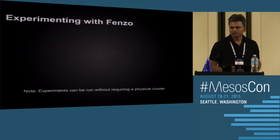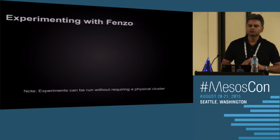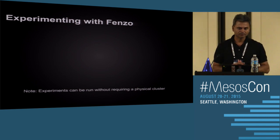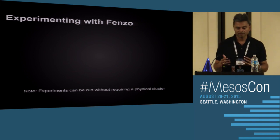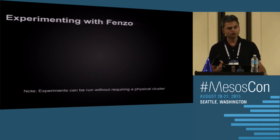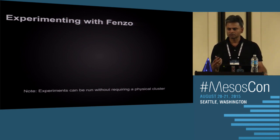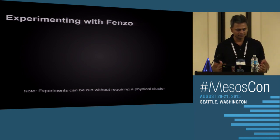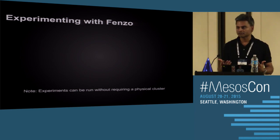Since FENZO is a scheduler library, you can experiment with it without spinning up an entire cluster. You can mock resource offer objects and feed them to FENZO — it doesn't depend on Mesos code itself, it has its own offer representation. You can give in task requests and easily write new fitness calculators to test their impact on scheduling time before putting anything into production.